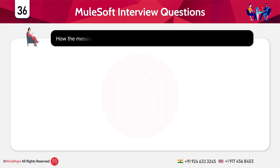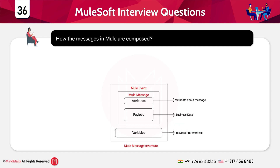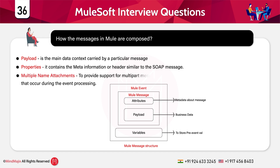How are messages in Mule composed? There are four different parts of the request business object: first, the payload, which is the main data context carried by a particular message; second, the properties, which contain meta information or headers similar to a SOAP message; third, optional named attachments to provide support for multi-part messages; and fourth, an exceptional payload for holding errors that occur during event processing.